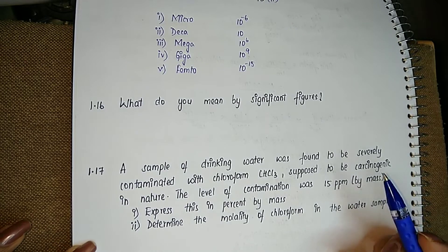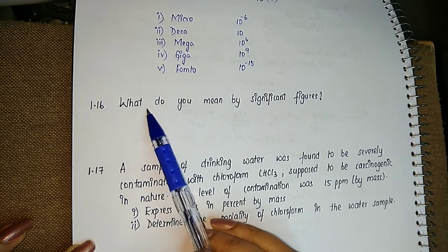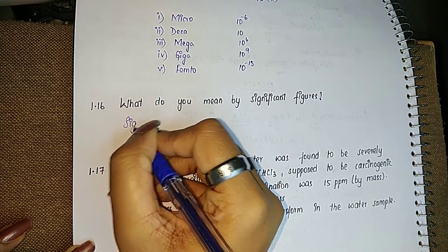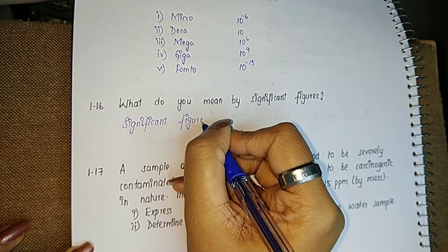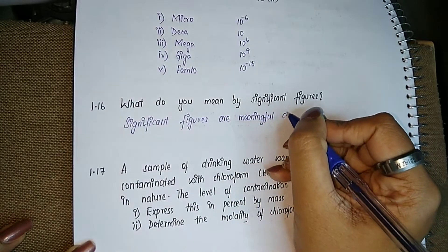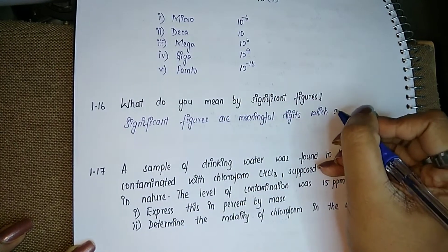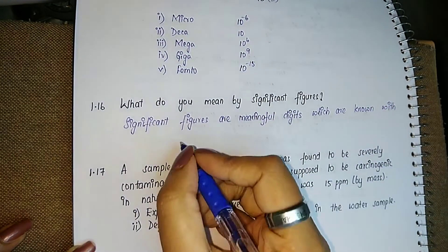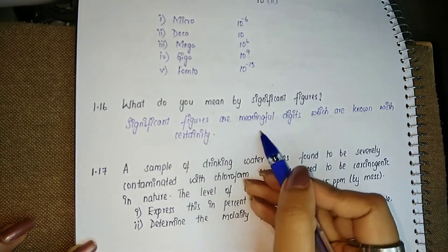In this video we will be solving two questions: 1.16 and 1.17. Question 1.16 is a one-mark question — what do you mean by significant figures? Significant figures are meaningful digits which are known with certainty. That's the simple one-mark definition.